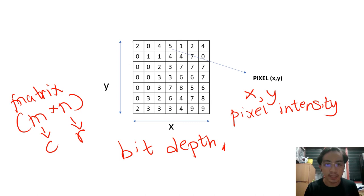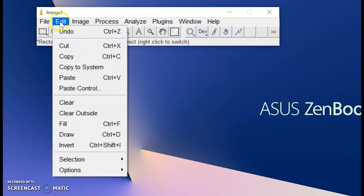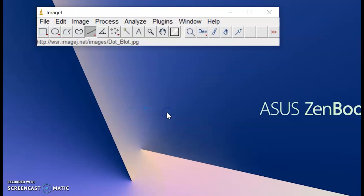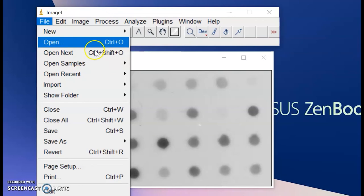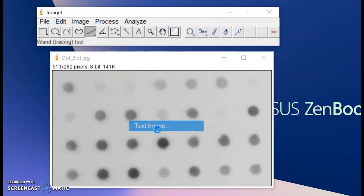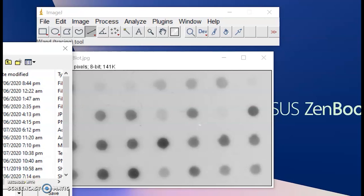Let us now use ImageJ to open the dot blot example. This is the image of the dot blot. Now let's try to save this image as a text file or text image. I'll save this one on my desktop.